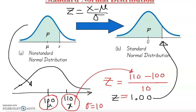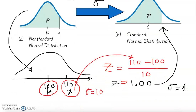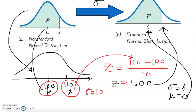So in the standard normal distribution, my standard deviation becomes 1.00 and my mean becomes 0.00. Your x value maps to a z-score. Now you can see the difference between standard and non-standard distribution.